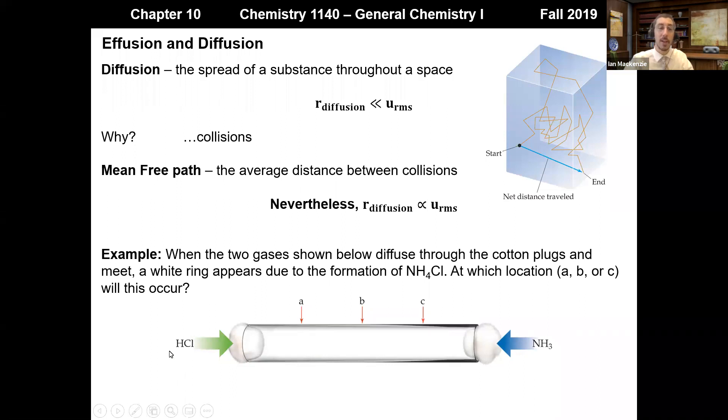So if I look at both of these, HCl has a molar mass of about 36 grams per mole. Ammonia has a molar mass of about 17 grams per mole. So ammonia has the lower molar mass and thus a higher root mean square speed and a higher rate of diffusion. So we would not expect them to meet exactly in the middle. We would not expect them to meet at point C closer towards ammonia. Since ammonia should have a higher rate of diffusion, we would expect them to meet more closer to point A in this process.